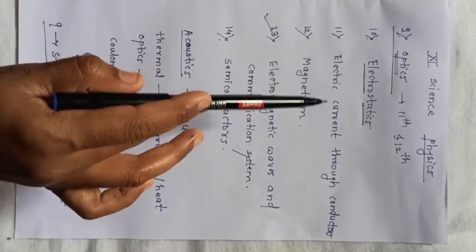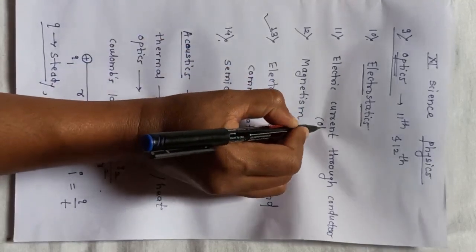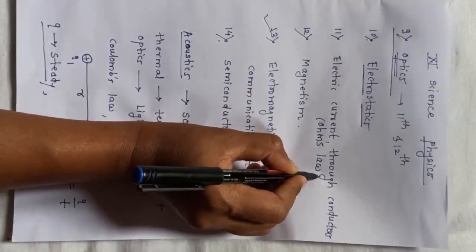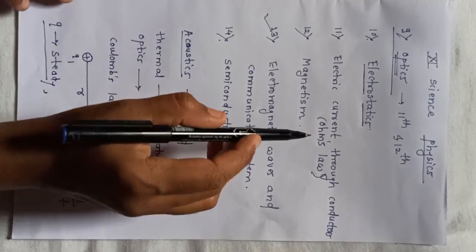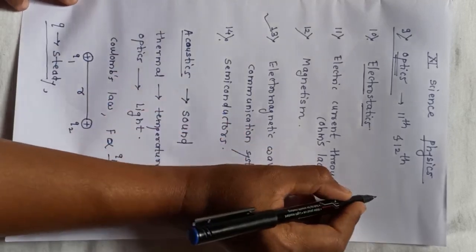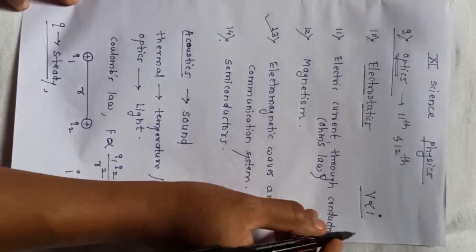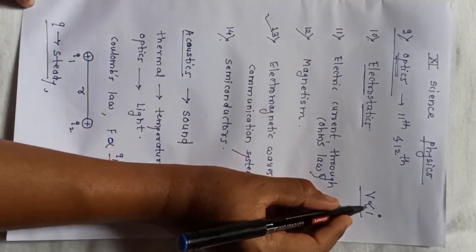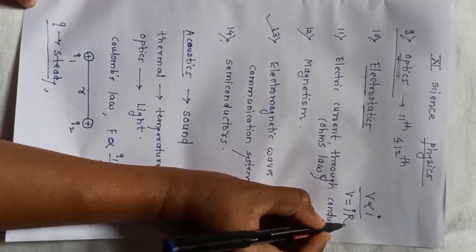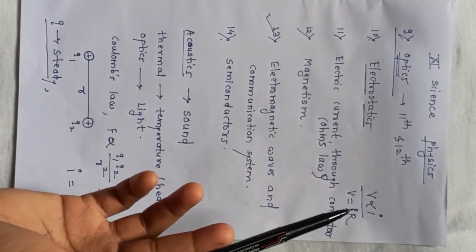The very famous law we have already studied is Ohm's law. Sir George Simon Ohm put forth this law and related electric current with potential difference. According to Ohm, the potential difference between the two ends of a conductor is directly proportional to the current flowing through the conductor. When we replace the proportionality sign using a proportionality constant, we get V equals IR. This is the famous formula of Ohm's law.